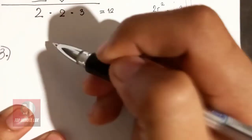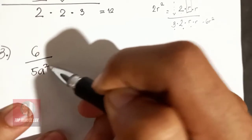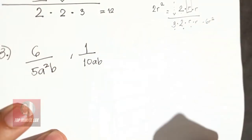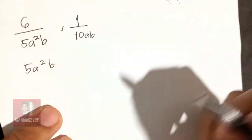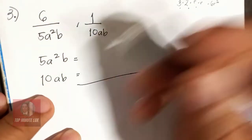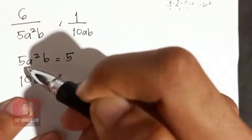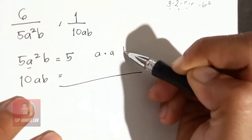For third example, 6 over 5A squared B with 1 over 10AB. So first, 5A squared B with 10AB. So since 5 is already a prime number, 5, you have 2 of A, A times A, and you have also B.